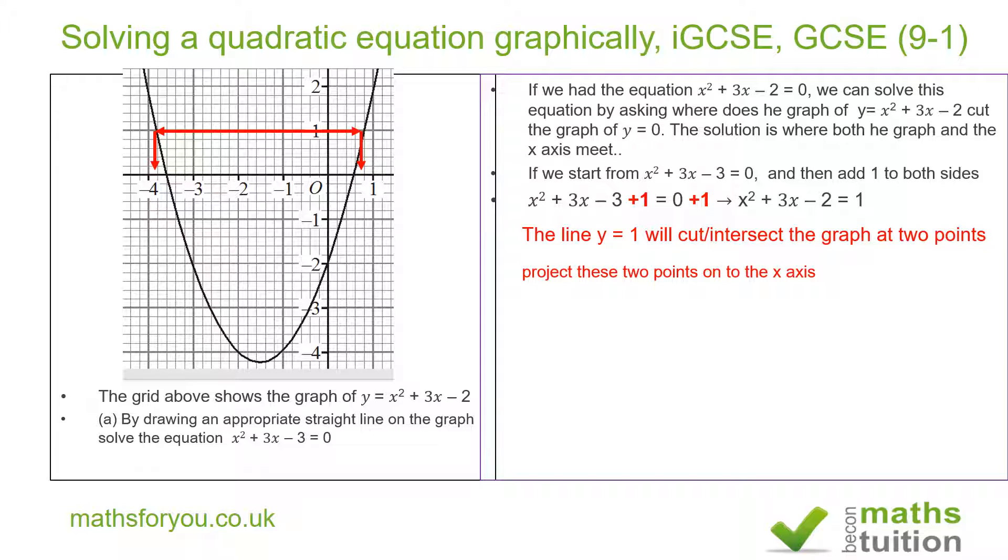So we end up with a solution of x is equal to minus 3.9 or 0.8. And we'll get to one decimal place here. And that should be the solution to our problem. Now part b similarly says also solve x squared plus 2x minus 1 is equal to 0.